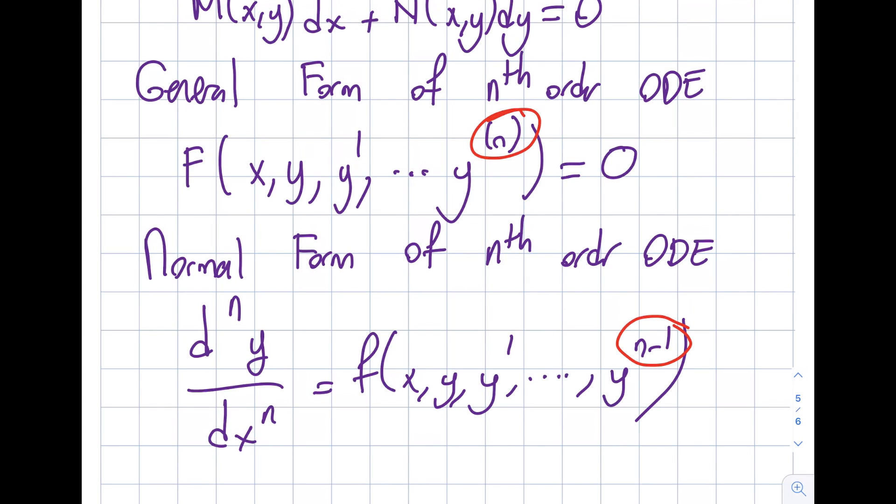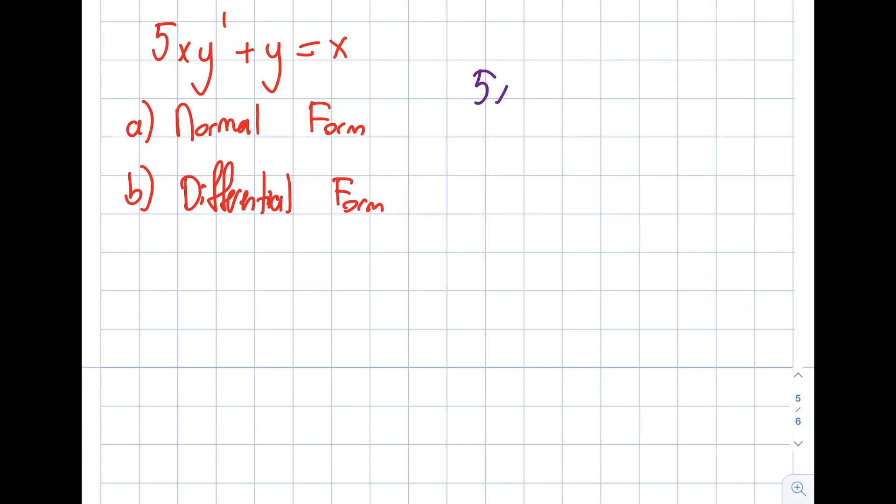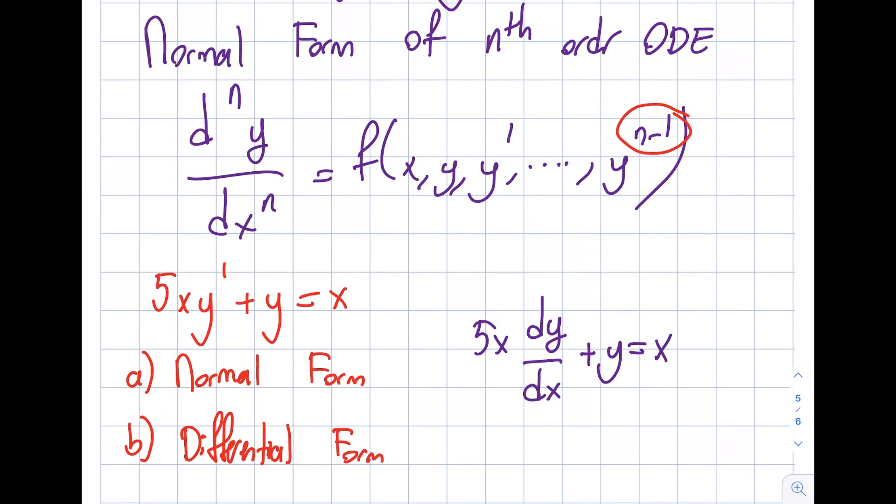This may get confusing, so I'm going to solve a basic question to illustrate differential and normal form. Let me give you a simple function because we're just getting started - I don't want to scare you. 5xy' + y = x. Prime notation is what I'm using. The question is: what is the normal form of it, and what is the differential form? First I'm going to write this as 5x(dy/dx). Leibniz notation is much more straightforward for me. I'm assuming this is x.